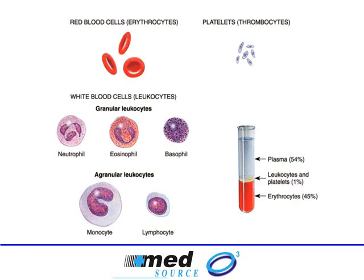Red blood cells, or RBCs, typically appear as shown in this diagram, and the scientific term for red blood cells is erythrocytes. Platelets are smaller, and the scientific term for platelets is thrombocytes. The third type of blood cells are white blood cells, also called leukocytes. As we discussed, white blood cells can be either granulocytes — which include neutrophils, eosinophils, and basophils, where you can appreciate the small granules in the diagram — or agranulocytes, which are monocytes and lymphocytes.